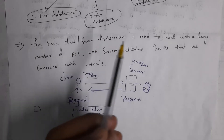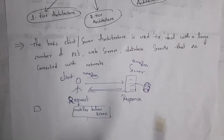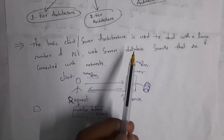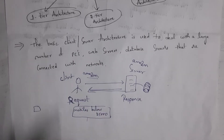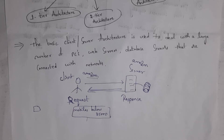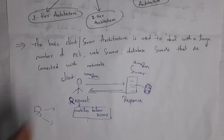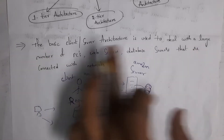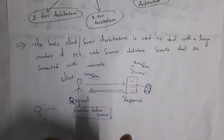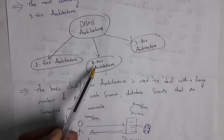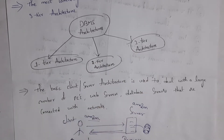The basic client-server architecture is used to deal with a large number of PCs, web servers, and database servers that are connected with a network — network is nothing but the internet. For example, Amazon is a simple example of client-server architecture, with multiple users accessing it at the same time over the internet. This two-tier and three-tier architectures are client-server architectures.